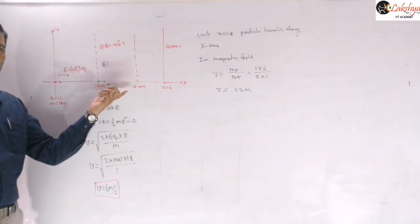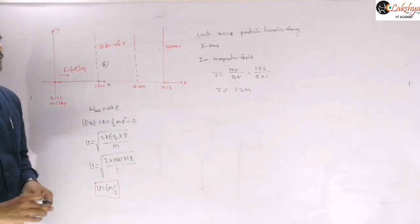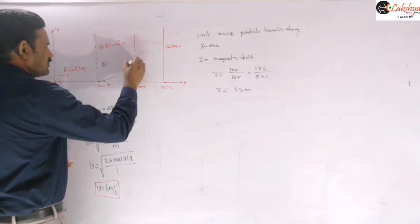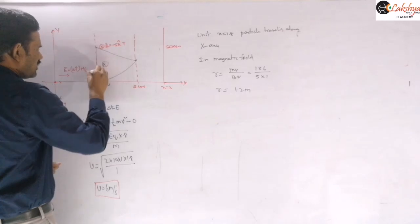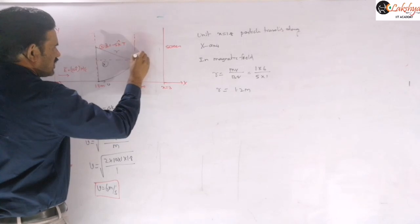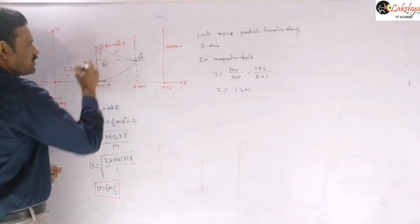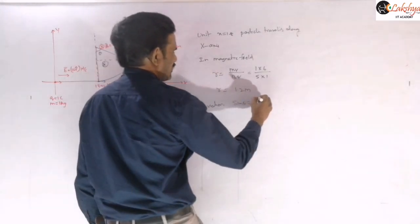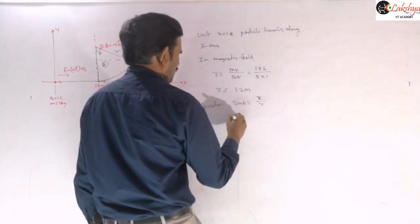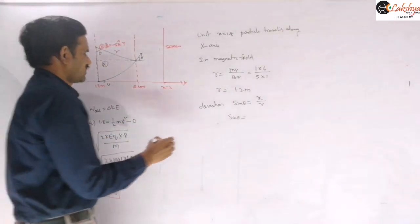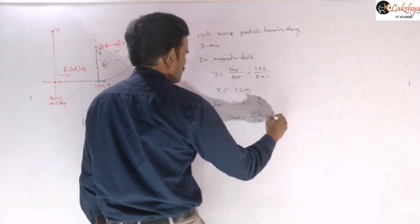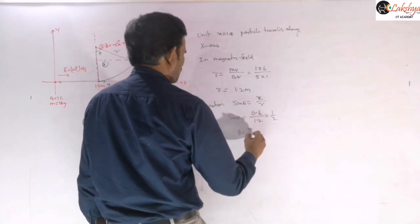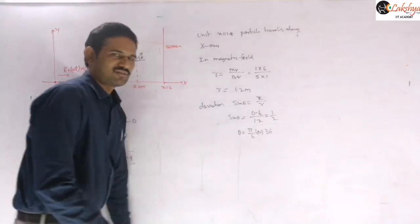The width of the magnetic field region is only 0.6 m, so the particle cannot complete a full circle — it undergoes some deviation. The deviation angle θ satisfies sin θ = x/r = 0.6 / 1.2 = 1/2, so θ = 30 degrees. That is the angular deviation produced by the magnetic field.